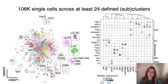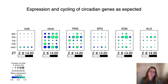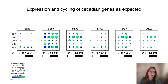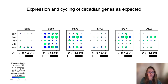After defining these 24 clusters, the first thing we wanted to check was whether our dataset could show the well-characterized clock machinery. And indeed we find all the major players: timeless, period, cry, clock, and clockwork orange, which are cycling as expected between different ZT times in the clock neurons. Specifically, period and timeless have high expression during the early night compared to the early morning, and the opposite is true for cry and clock. Interestingly, we also see this cycling in different glia cell types.